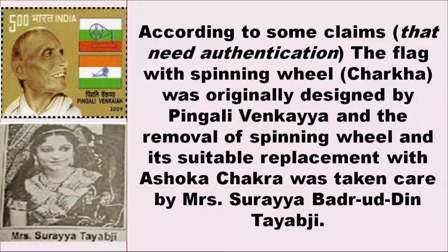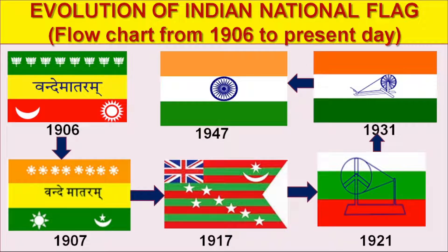According to some claims that need authentication, the flag with the spinning wheel Charkha was originally designed by Pingali Venkayya, and the removal of the spinning wheel and its replacement with the Ashoka Chakra was carried out by Mrs. Suraya Badruddin Tyabji. The evolution of the Indian national flag flowchart runs from 1906 to the present day: first phase in 1906, second phase in 1907, third phase in 1917, fourth phase in 1921, fifth phase in 1931, and the sixth and final phase in 1947.